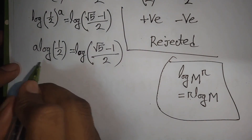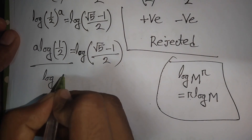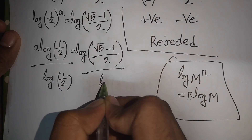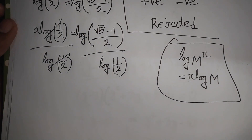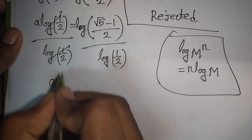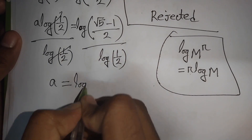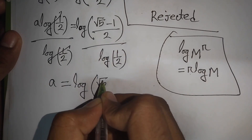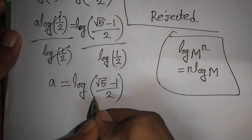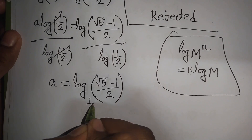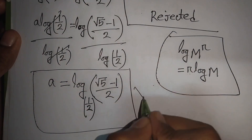Now we divide both sides by log(1/2) to isolate a. So log(1/2) cancels on the left, and a equals log of (root 5 minus 1) over 2, divided by log(1/2). This can be written as log base (1/2) of (root 5 minus 1) over 2. This is the final value of a.